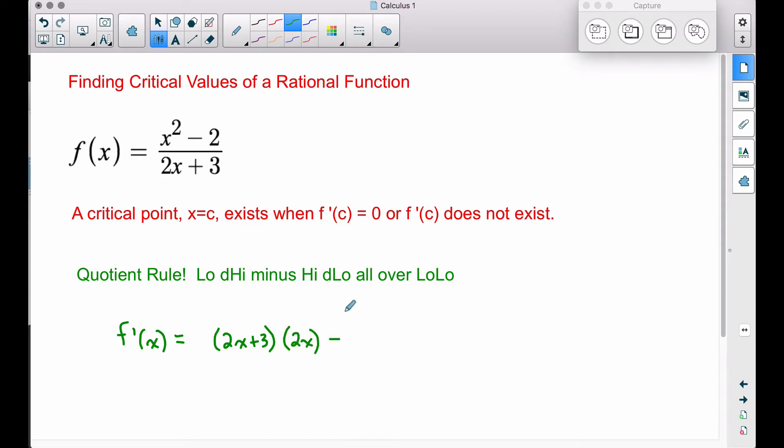Minus high, now we leave the top function alone, so x squared minus 2, that is our top function. d low, now we multiply by the derivative of the lower function, the bottom function, that is going to be 2, all over low low. That means we take the lower function and we multiply it times itself, so you can think of it as low squared, therefore we have 2x plus 3 all squared.